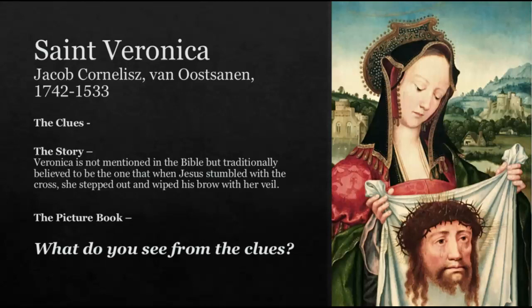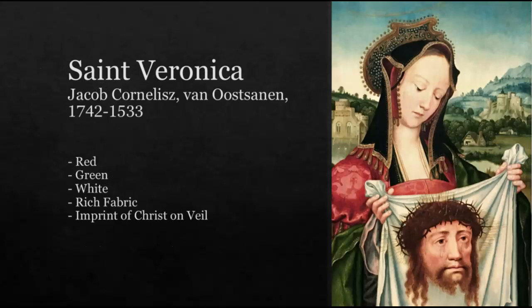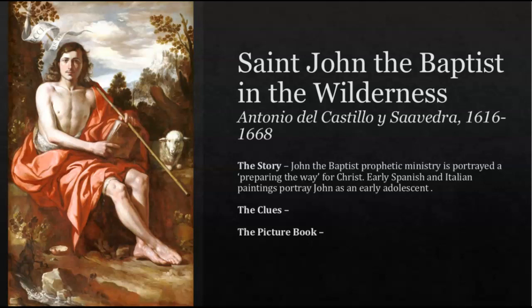Here's St. Veronica. St. Veronica is not in the Bible. The legend says, by tradition, that when Christ was carrying the cross and fell down, she reached over and took her white veil and wiped his brow. So in this picture you see Christ's image on the veil, because she wiped his brow with it. We see red, green, and rich colors. Red tells us her love for Christ and her earthly nature. The green tells us about the resurrection — she believes in the resurrection. She shows rich fabric, meaning the artist thought she had some wealth, and of course there's the imprint of Christ on the veil.